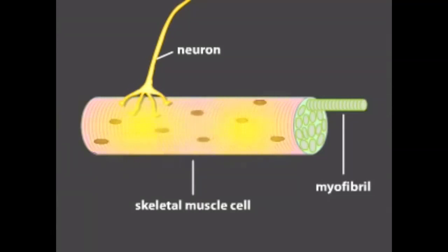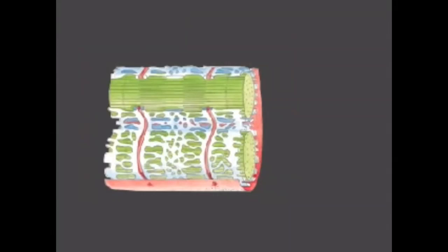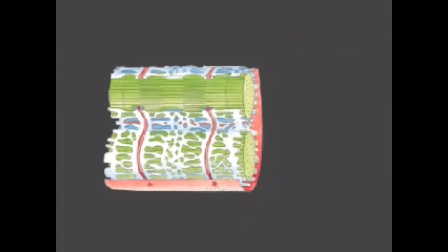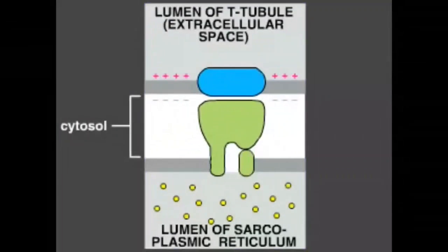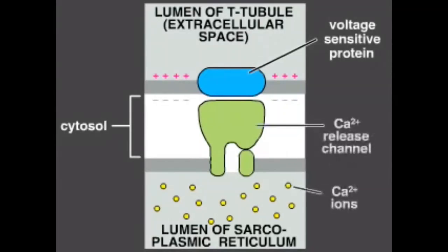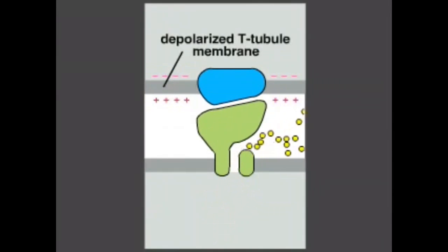An action potential releases internal stores of calcium that flow through the muscle cell and trigger a contraction. Muscle cells have an elaborate architecture that allows them to distribute calcium ions quickly throughout the cytosol. Deep tubular invaginations of the plasma membrane called T-tubules crisscross the cell. When the cell is stimulated, a wave of depolarization — an action potential — spreads from the synapse over the plasma membrane and via the T-tubules deep into the cell, releasing a burst of calcium ions throughout the cytosol.